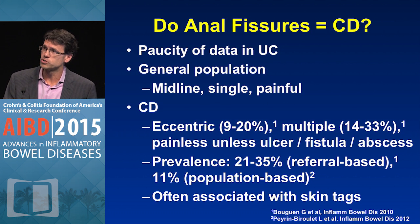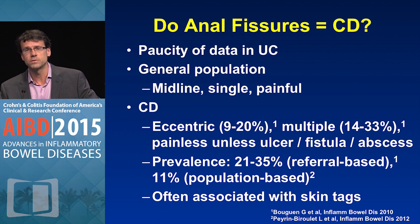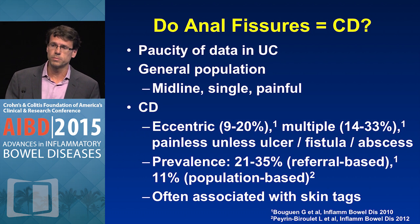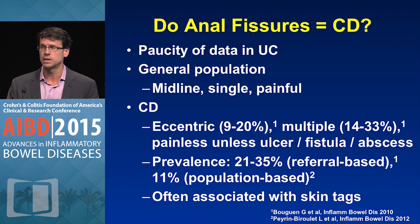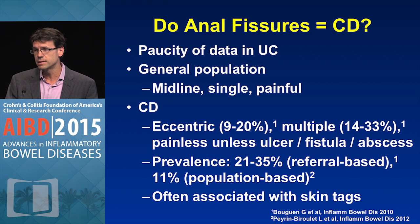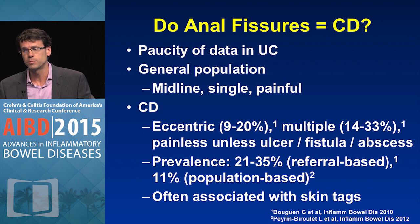How about anal fissures — do they mean that you have Crohn's disease? There is some data in ulcerative colitis, but anal fissures are very common in the general population, where they tend to be midline, single, and painful. However, in Crohn's disease, although posterior midline is still the most common location, they can be in other areas, may be multiple, and are often painless unless also associated with an ulcer, fistula, or abscess. In population-based studies, the prevalence of anal fissures in Crohn's is about 11%, and they're often associated with skin tags.